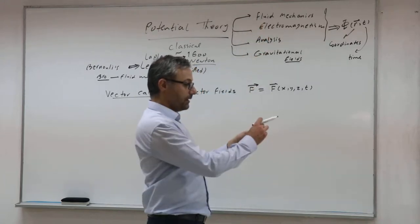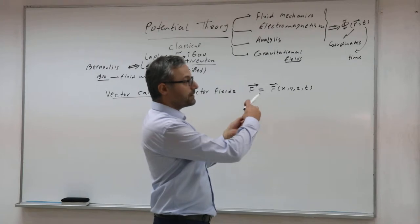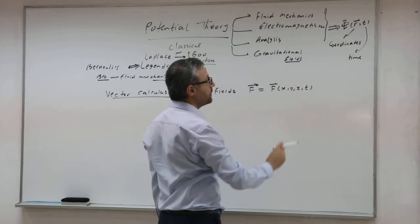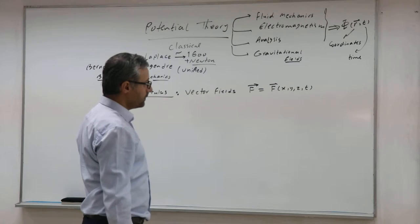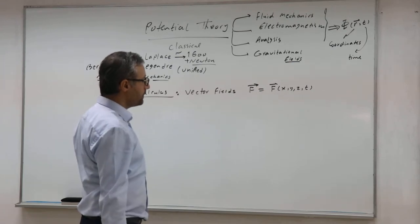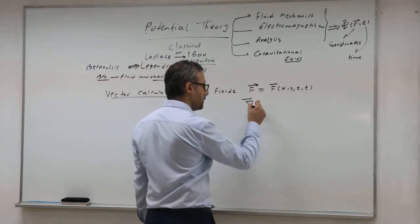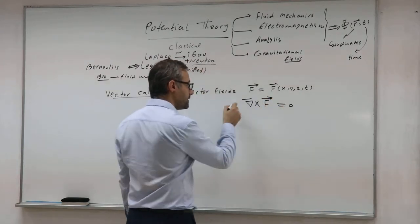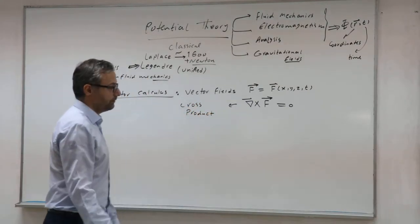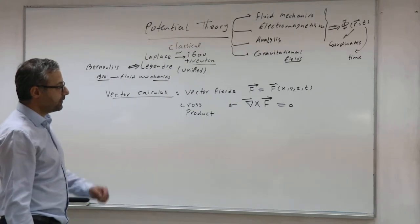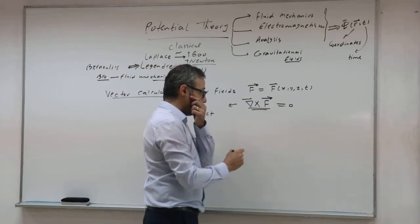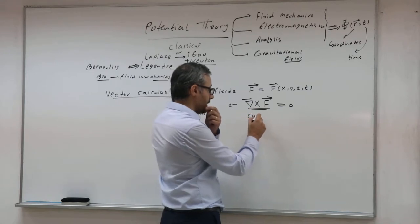For example, fluid mechanics is the question about the dynamics of fluids, so it's always referred to coordinates X, Y, Z at time T. This is a vector field. If you remember, we introduced the derivative for vector fields — mainly two types of derivative were very important. One is the cross product or vector product of the vector field. I don't remember whether I talked about how to calculate the curl or not.